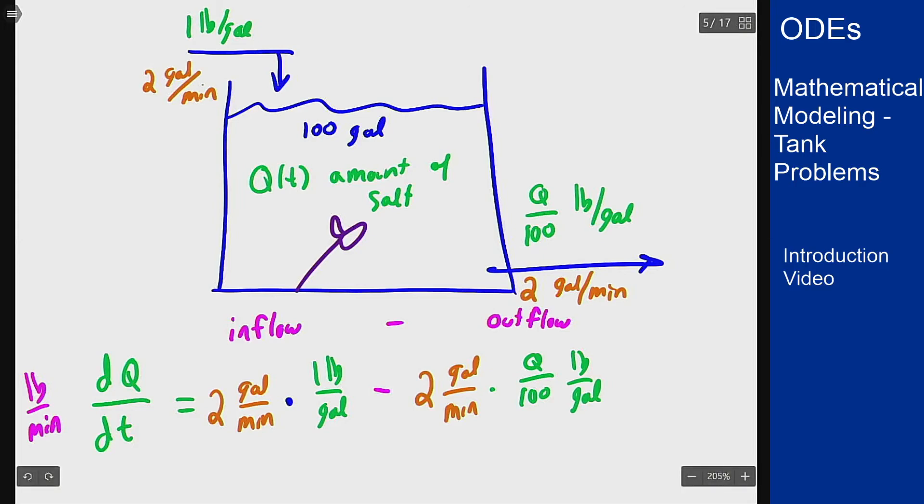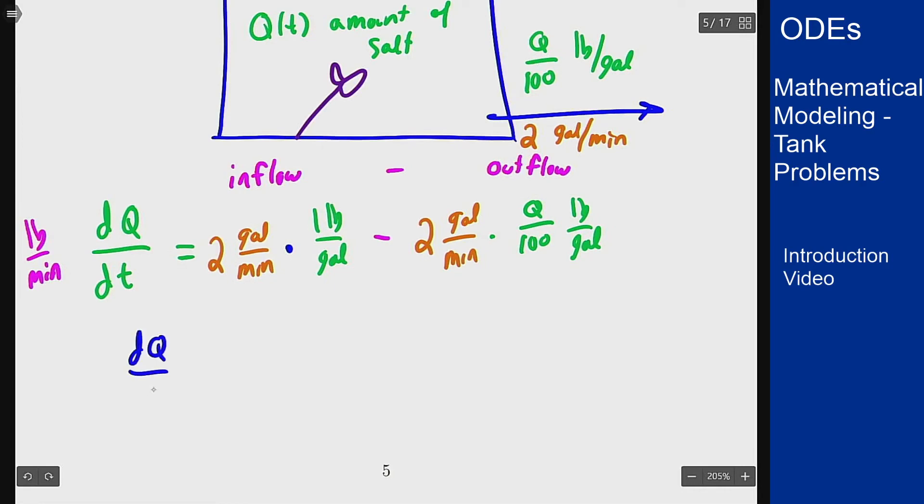So I can write a differential equation then as dQ/dt = 2 minus Q/50. Now what is my initial condition here? Well I'm told that I start with 5 pounds of salt so my Q(0) = 5. And now we can try to solve this differential equation.